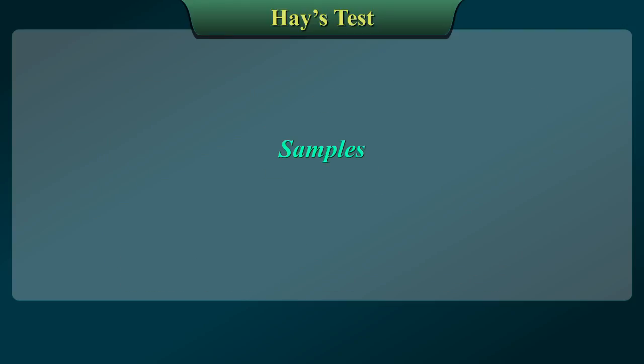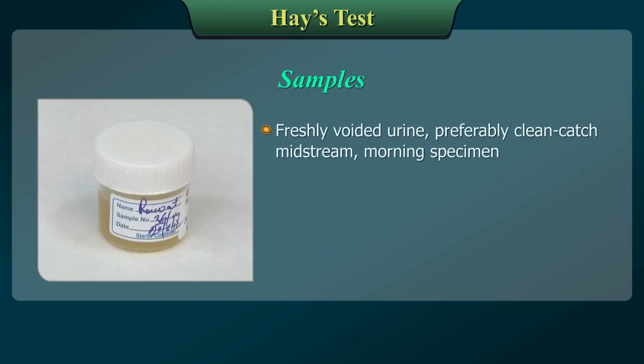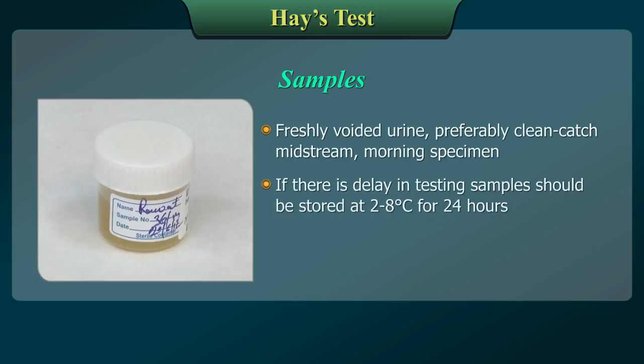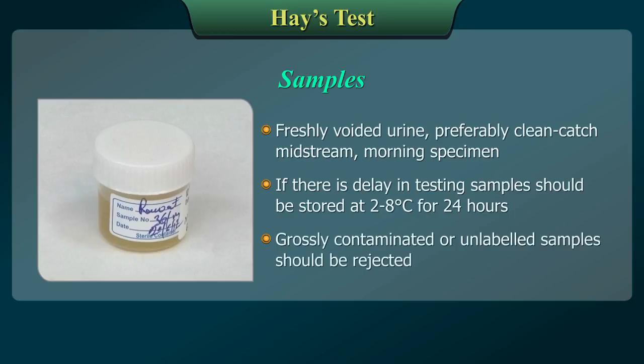Samples: Use freshly voided urine, preferably a clean-catch midstream morning specimen. Samples can be stored at 2–8 degrees centigrade for 24 hours. Grossly contaminated or unlabeled samples should be rejected.